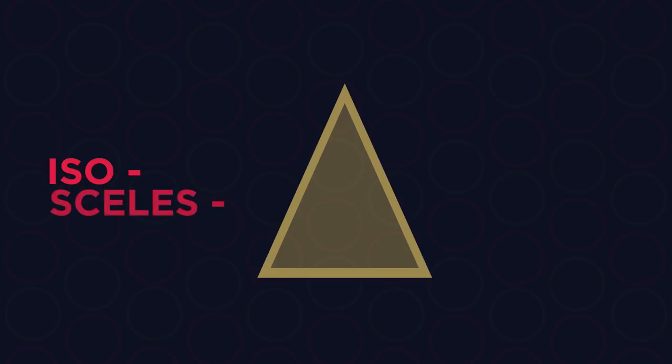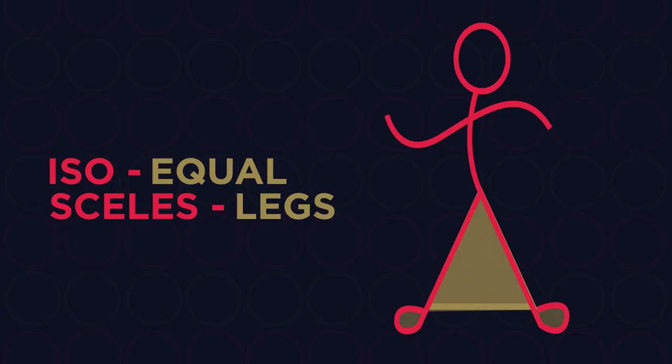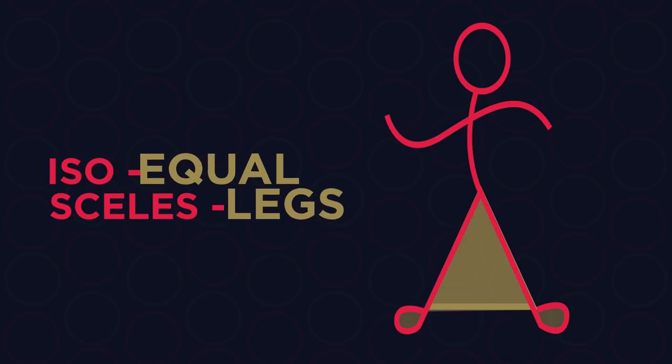Isometric paper is made up of lots of equal triangles. An isosceles triangle is one that has equal legs. Two legs of the same length and then the base. So just remember that the word isosceles means equal legs.